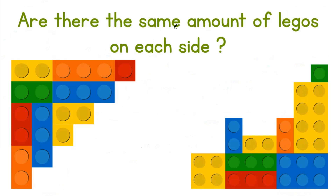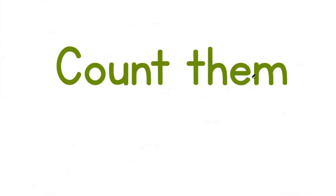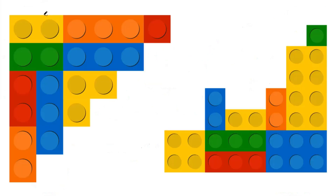Are there the same amount of Legos on each side? Count them. 1, 2, 3, 4, 5, 6, 7, 8, 9. There are 9 on the left-hand side.